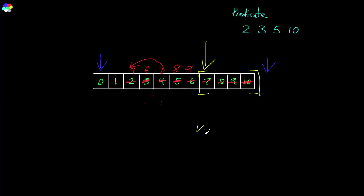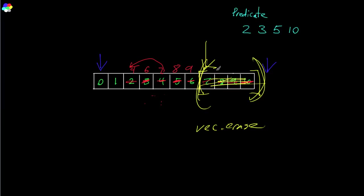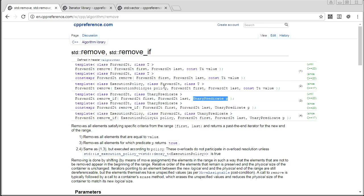You use that iterator and call vec.erase to erase the stale section, and then you're done. You might be wondering: why doesn't this algorithm erase this stuff for you? The answer is that these algorithms work on iterators — they don't work at the container level. They have no concept of a container, they can't call the erase function. They only work with values, shuffling those values around, and then they return an iterator. It's up to you to actually mutate the container to get rid of the stale section.